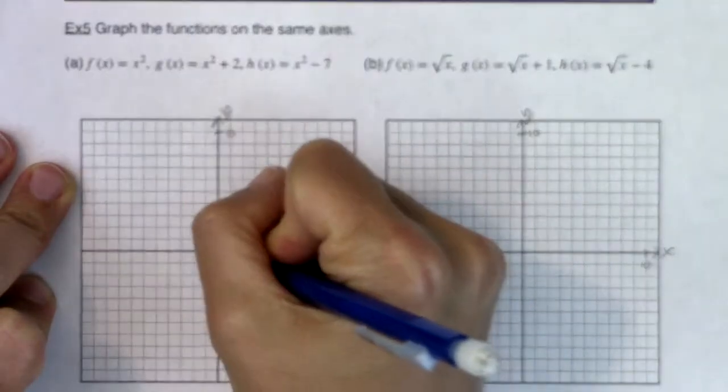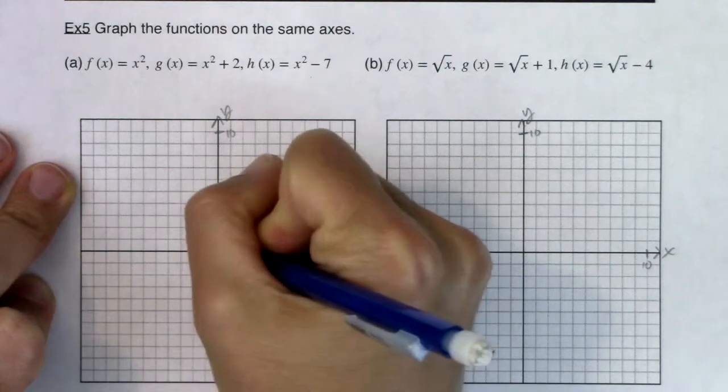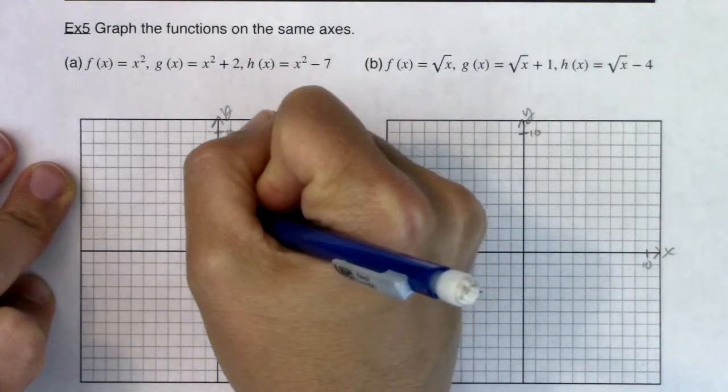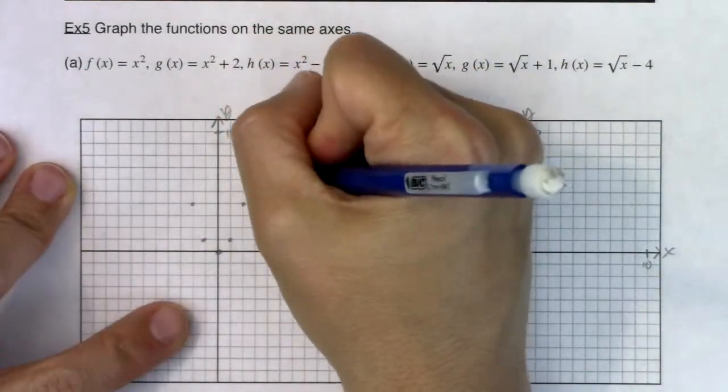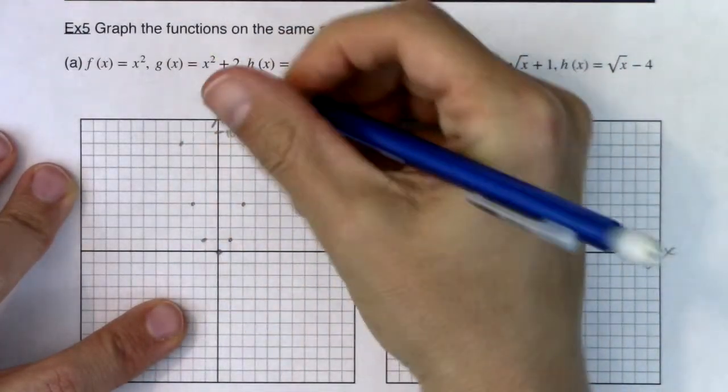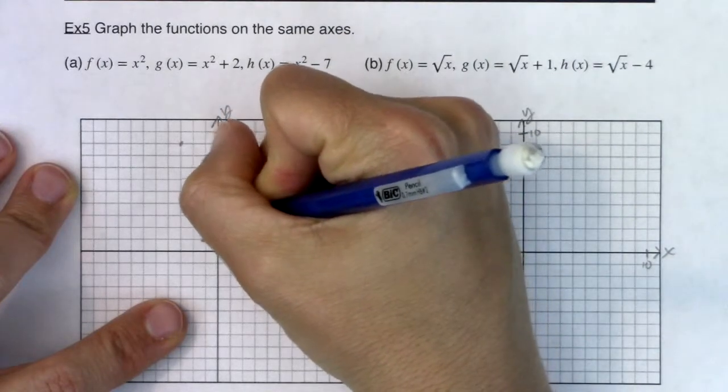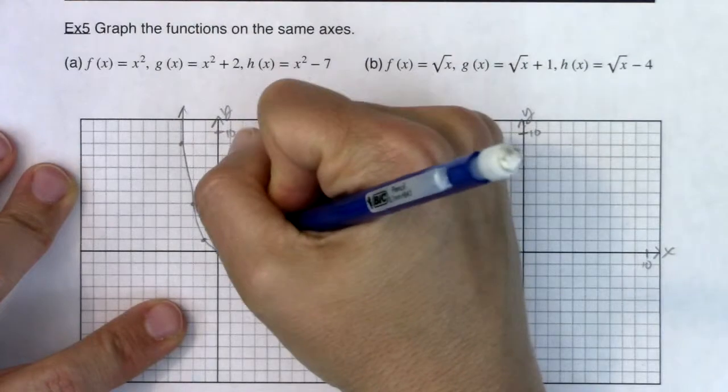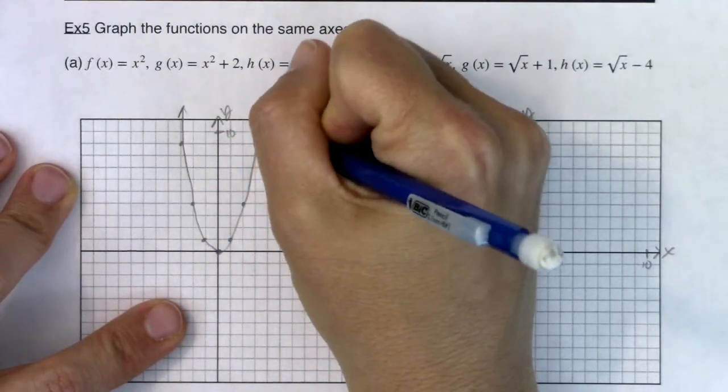Alright, so I have 0, 0, 1, 1 and then negative 1, 1. I have 2, 4 and then negative 2, 4. And then I have 3, 9 and negative 3, 9. Alright, those are your basic, that's a good seven points to draw your parabola, your quadratic function.